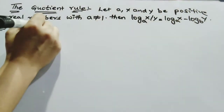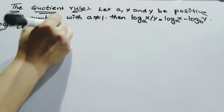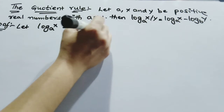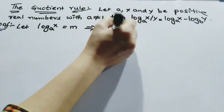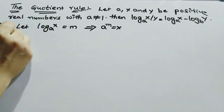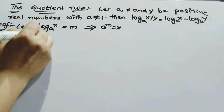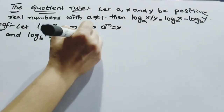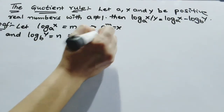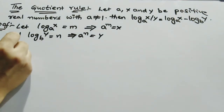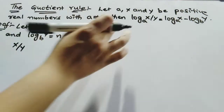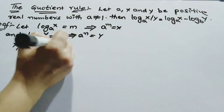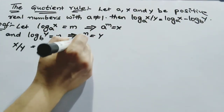Let log x base a equal to m, so the exponential form is a to the power of m equals x. And log y base a equal to n, so a to the power of n equals y. Then we divide x by y.